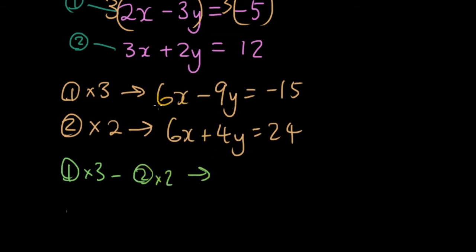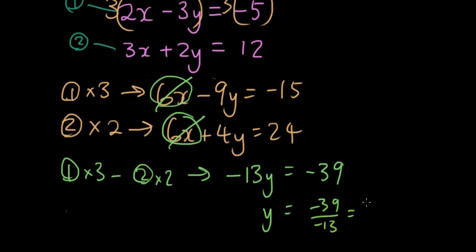So basically the top line minus the second line. So 6x minus 6x is 0x, so we don't even have to write it. Negative 9y minus 4y is negative 13y. And negative 15 minus 24 is negative 39. So y is equal to negative 39 over negative 13, which is 3.